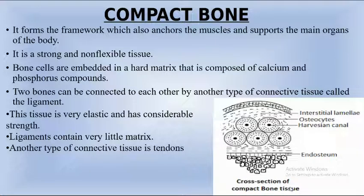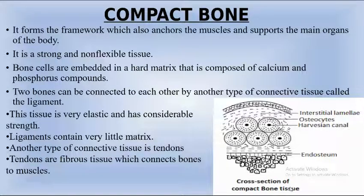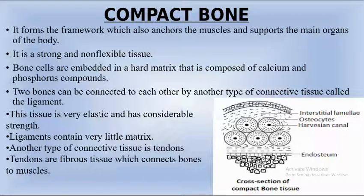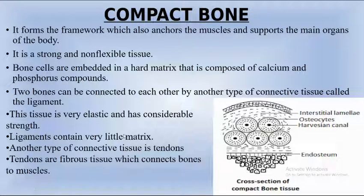Another type of connective tissue is tendons. Tendons are fibrous tissue which connects bones to muscle, whereas ligaments connect bone to bone. These two tissues are very important. Tendons have great strength but limited flexibility, unlike ligaments which have elasticity.